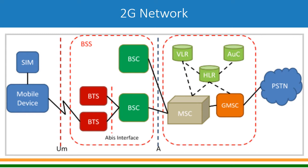Let us look at the network diagram of 2G, second generation mobile telecommunications. We have a mobile device with a SIM. On the radio part, you have base stations — antennas are installed at towers. Below the tower you have BTS, and the BTSs connect to the Base Station Controller, BSC. The entire system is called BSS.